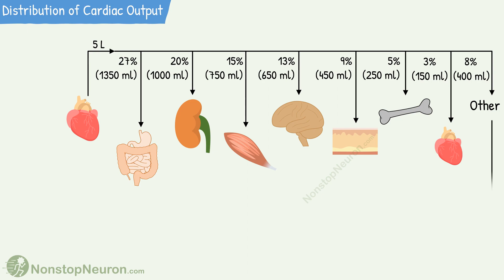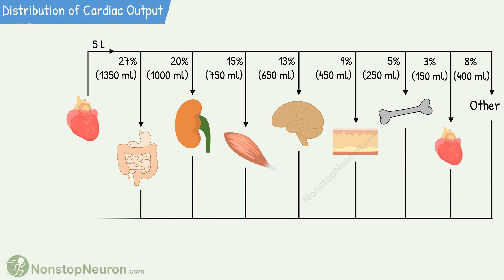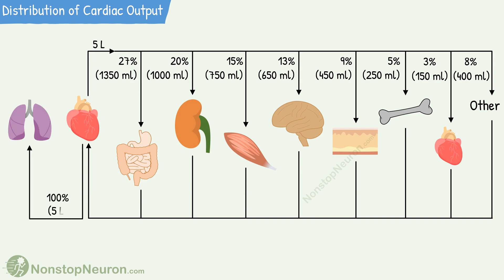From all these organs, the blood returns to the right heart. From here, 100% of blood goes to the lungs, and from there, to the left heart.